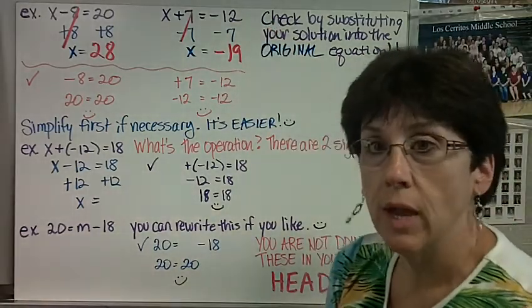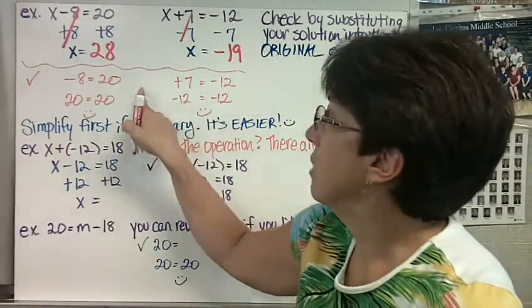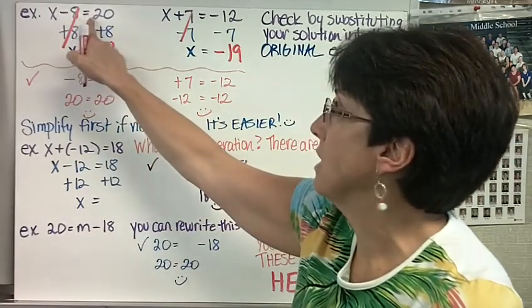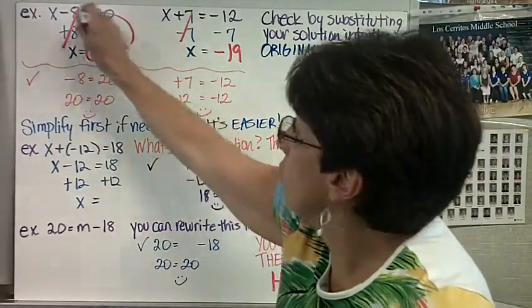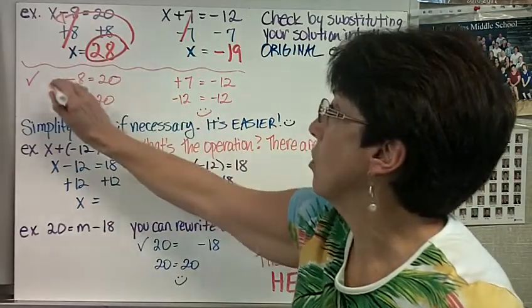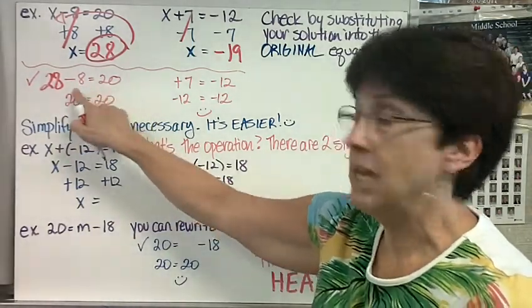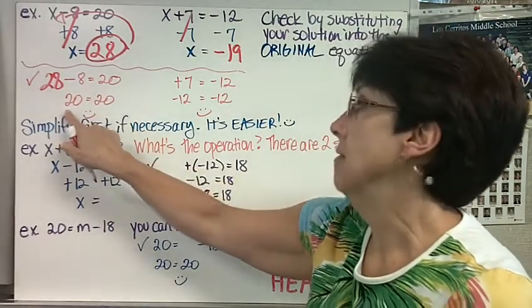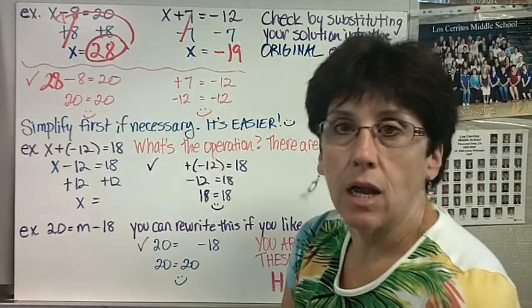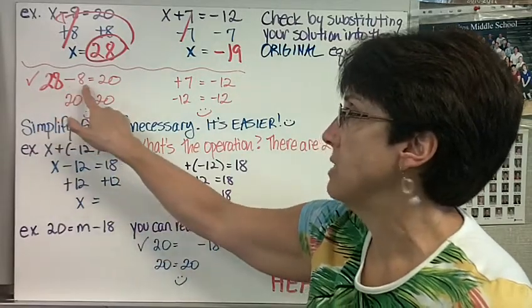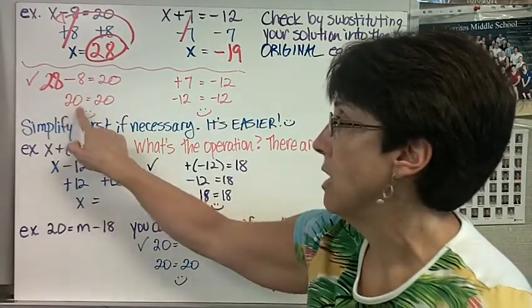Now you can check to make sure you're right by substituting your solution into the original equation. So let's check these two problems now. Here's my original equation. x minus 8 equals 20. I say x equals 28. So I'm going to plug this 28 in for the x in my original equation. 28 minus 8 is 20. Is that true? Is 28 minus 8 20? Yes. You have to show me this line because you have to show that it's true. So you have to show me that this is true.